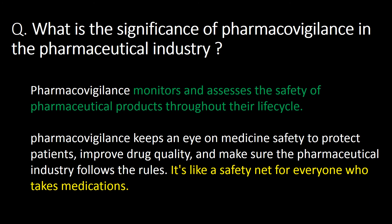What is the significance of pharmacovigilance in the pharmaceutical industry? Pharmacovigilance monitors and assesses the safety of pharmaceutical products throughout their life cycle. Pharmacovigilance keeps an eye on medicine safety to protect patients, improve drug quality, and ensure the pharmaceutical industry follows the rules. It is like a safety net for everyone who takes medications.